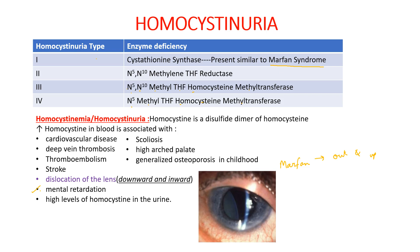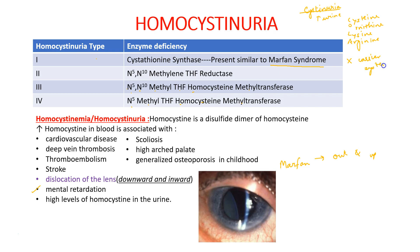Another inborn error of metabolism seen in sulfur-containing amino acid disorders is cystinuria. In cystinuria there is increased urinary levels of 4 amino acids: cysteine, ornithine, arginine, and lysine. This occurs because of a defective carrier system in the kidney which is responsible for renal reabsorption of these amino acids.